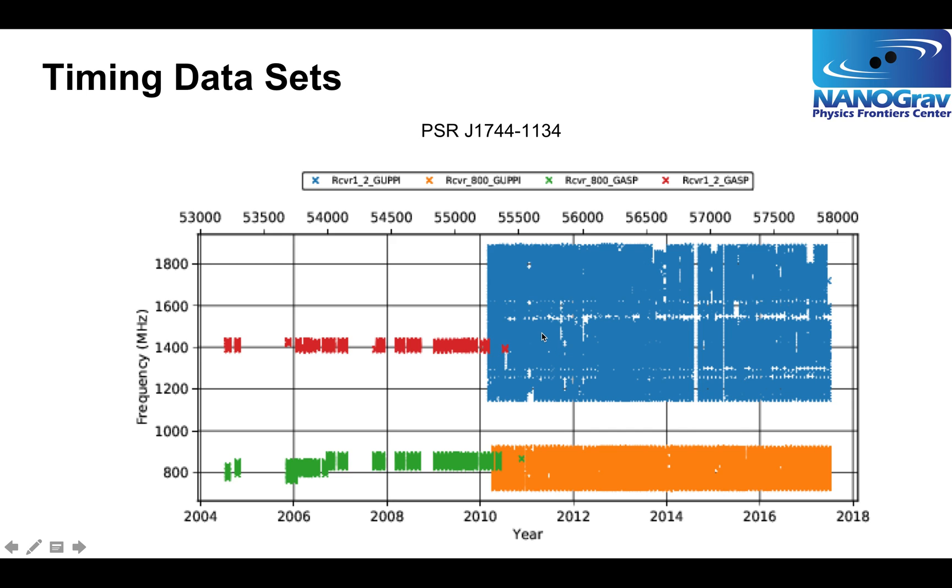At every epoch, we observe each pulsar with two separate receivers, so we get a wide band around 1500 megahertz and a somewhat wide band around 800 megahertz. By observing at a very wide range of frequencies, we are better able to measure and mitigate interstellar dispersion and potentially other interstellar effects.